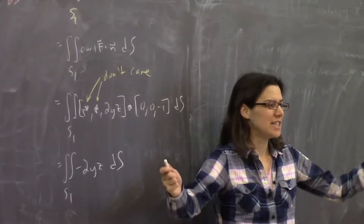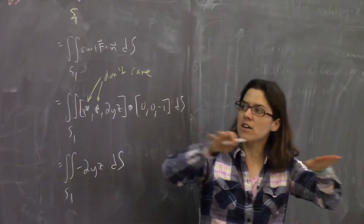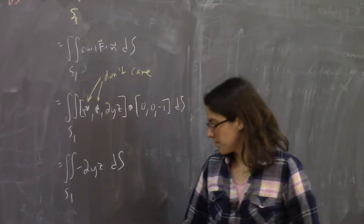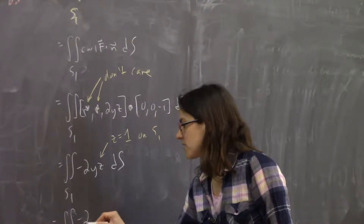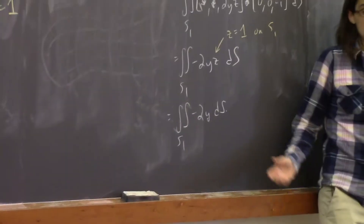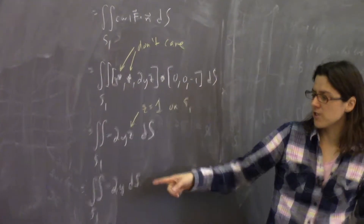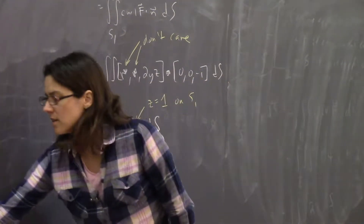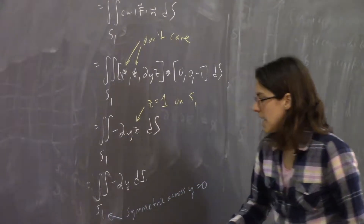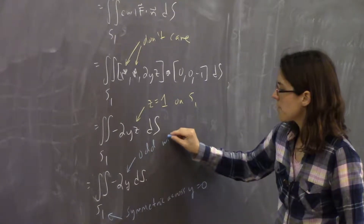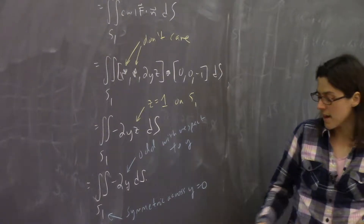So much better! I think we're going to be able to do it. We could parameterize and compute now, but notice that along S1 — a flat disk at z = 1 — we have z = 1. So this is actually just the double integral over S1 of −2y dS. This is a very symmetric region: S1 is symmetric across y = 0, and the function −2y is odd with respect to y. So integrating an odd function over a symmetric region gives zero.